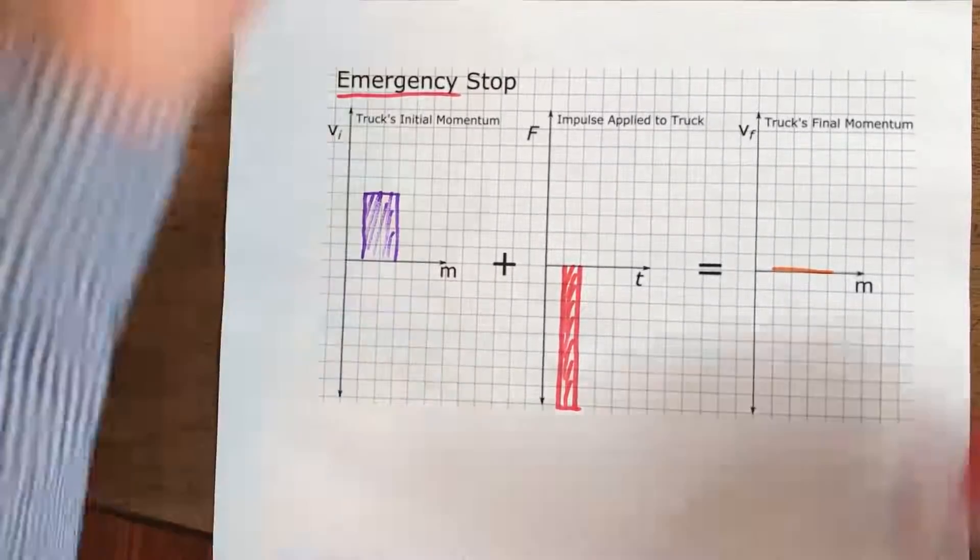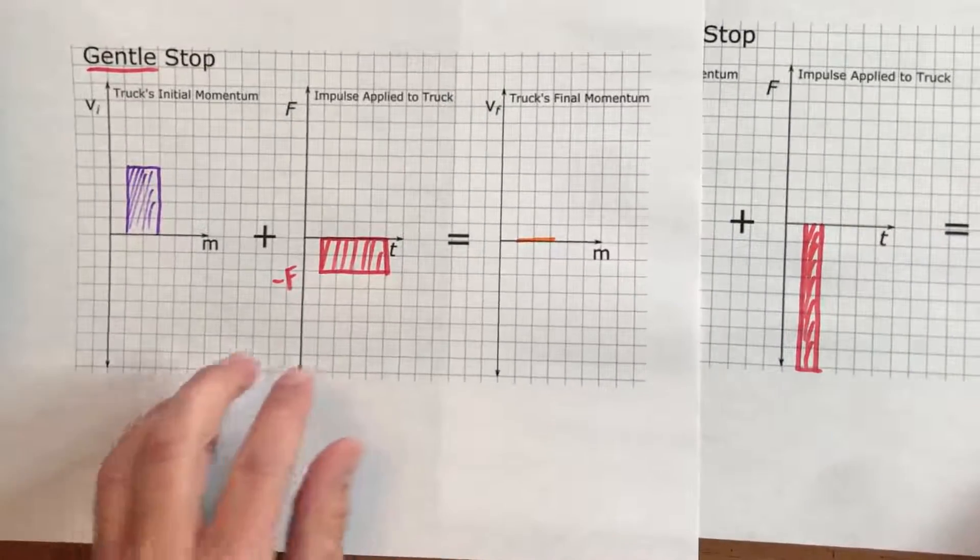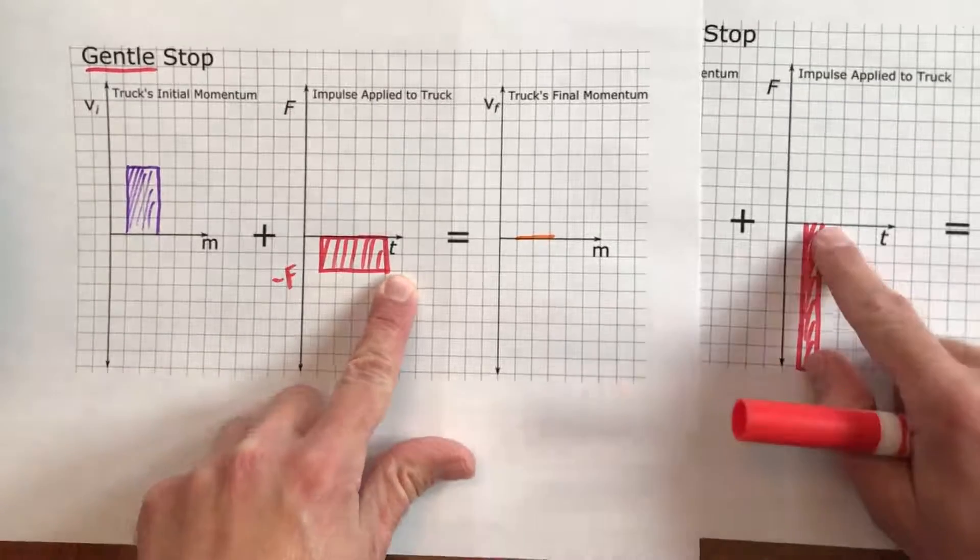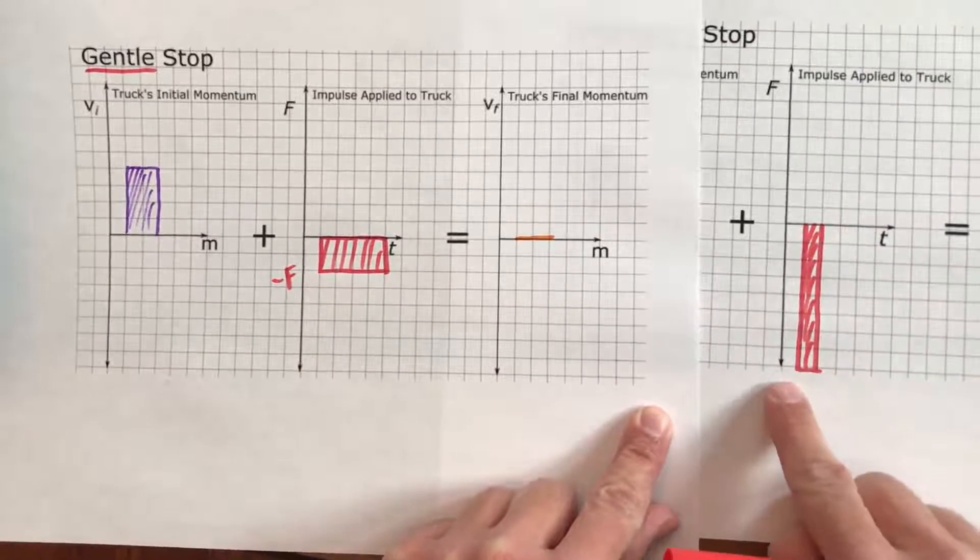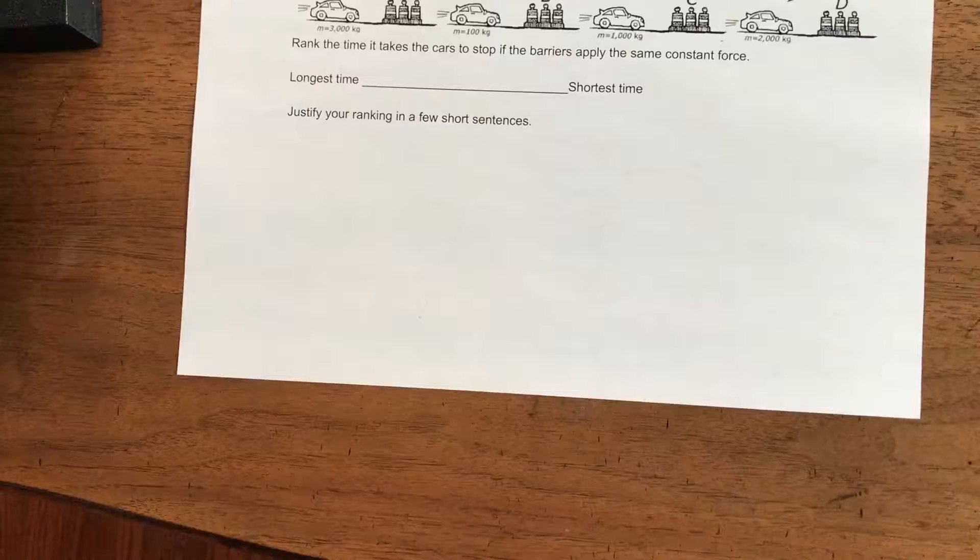So again if we put them sort of side by side, here's a smaller force, we don't go down as much over a longer time, and here's a much bigger force over a much shorter amount of time. But the same impulse in each, same change in momentum for each.